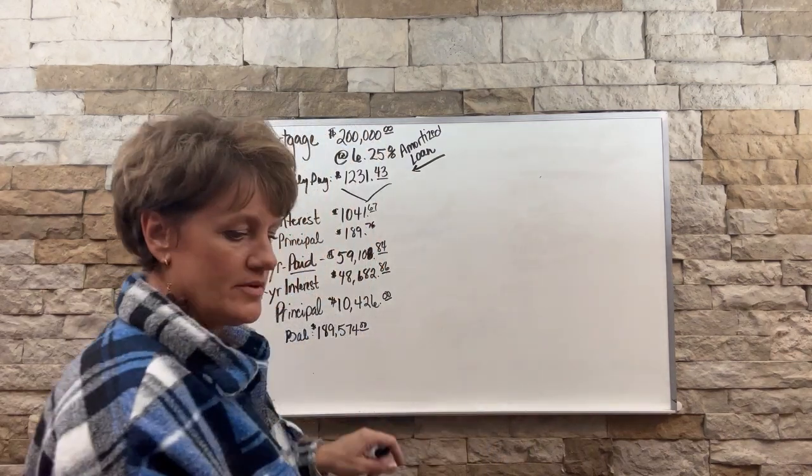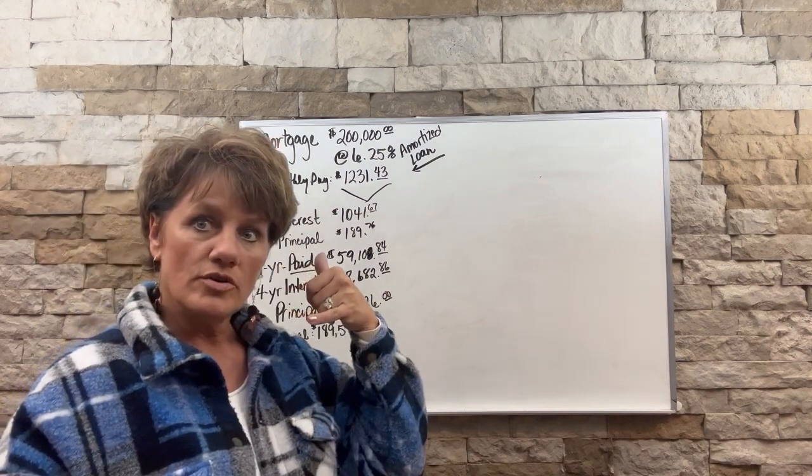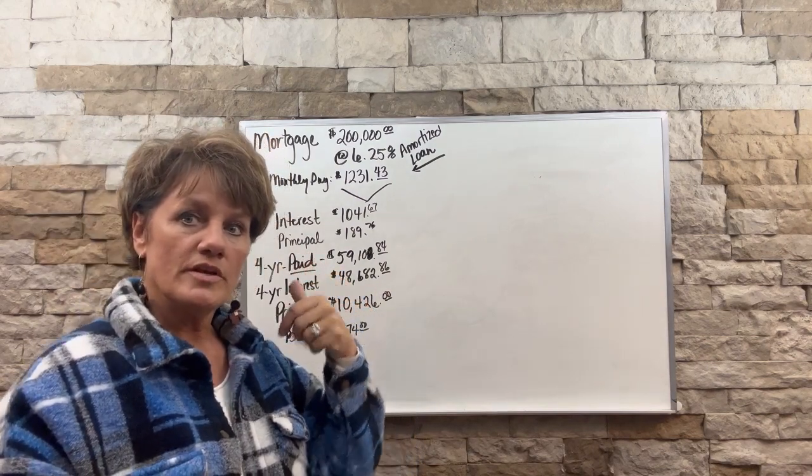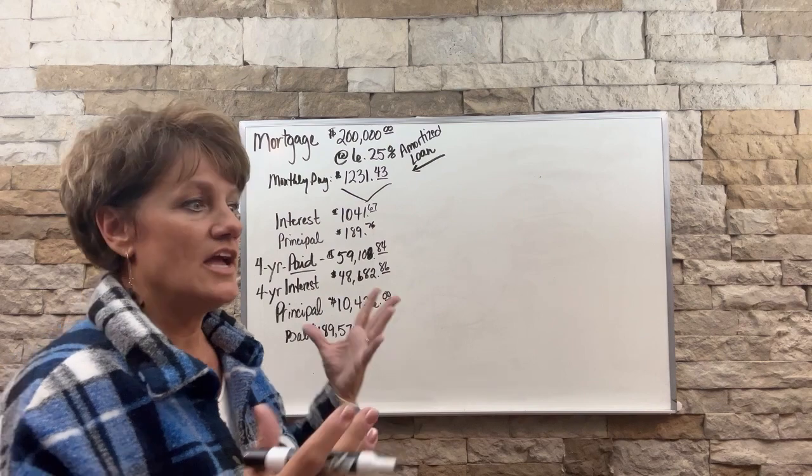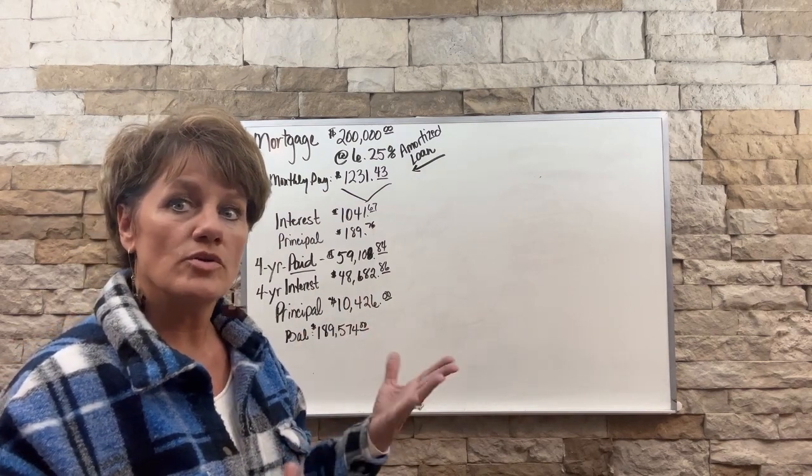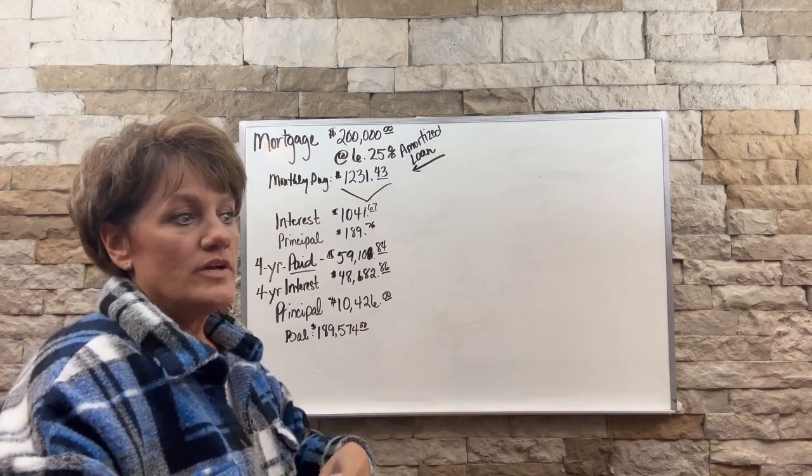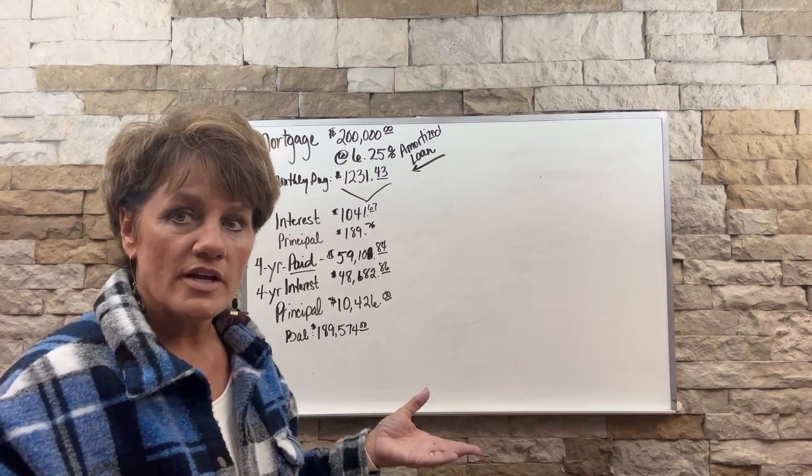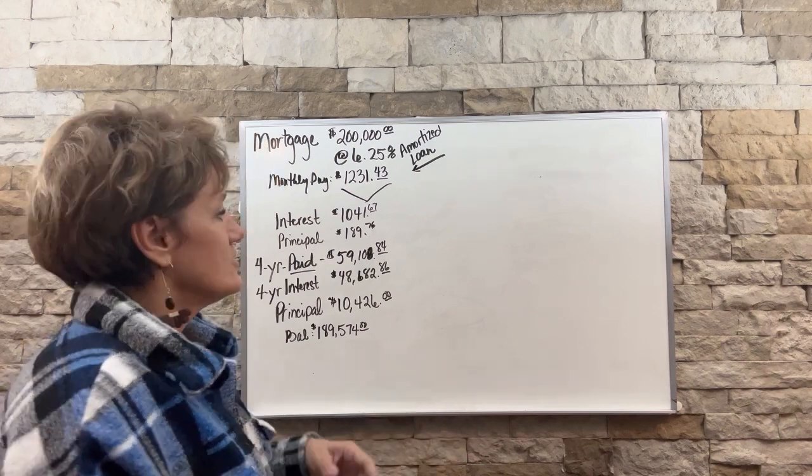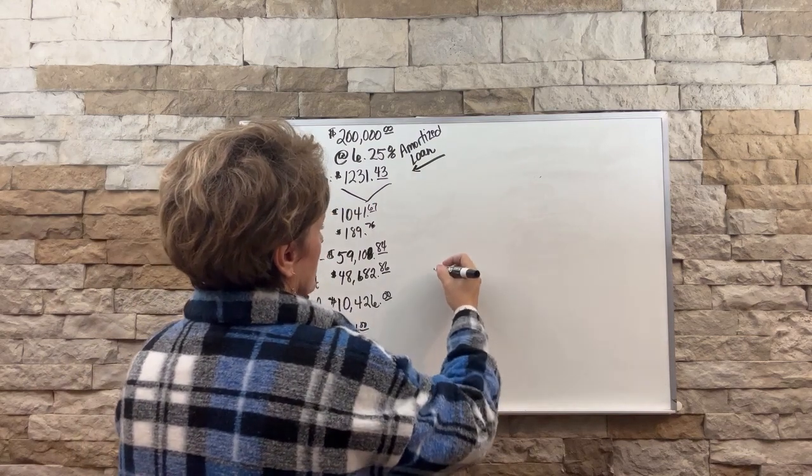Now, what happens is at the four year mark, you'll get a phone call from your mortgage company or a letter in the mail and they say, Hey, you've done such a great job on your mortgage payments that we want to make you an offer. We can extend the loan out. We can give you a cheaper interest rate. I mean, all these different things, right?